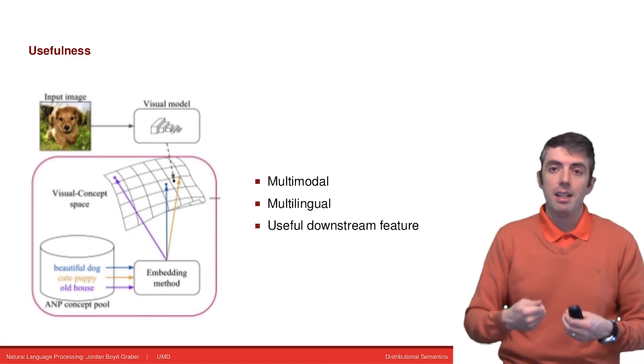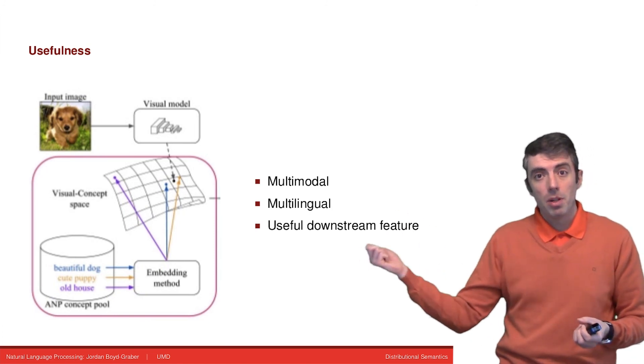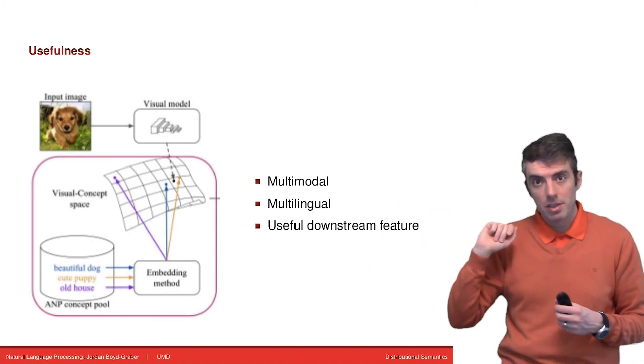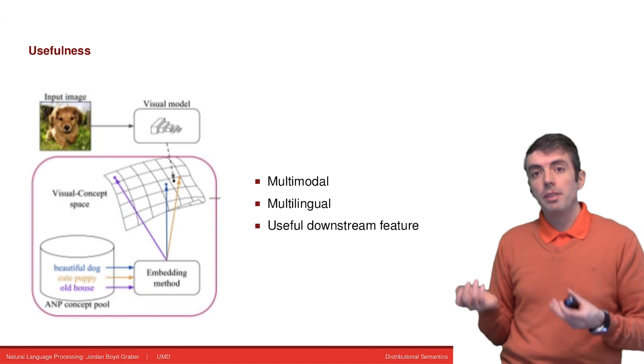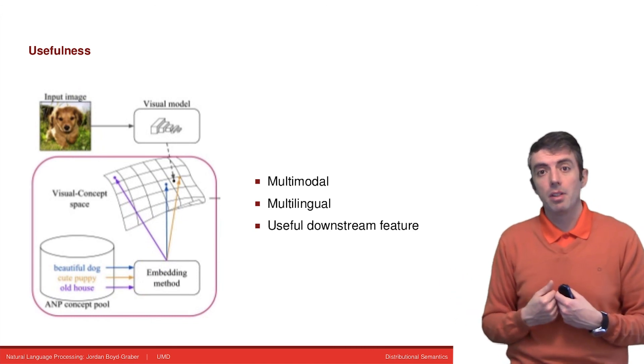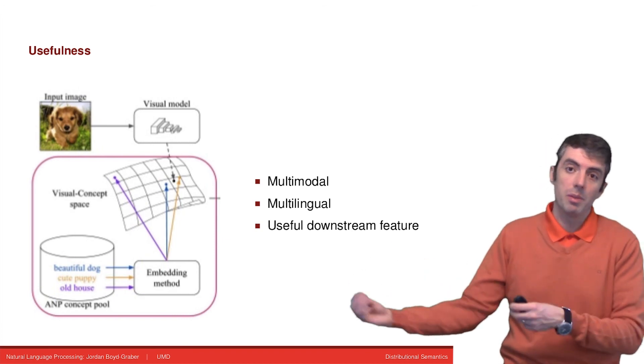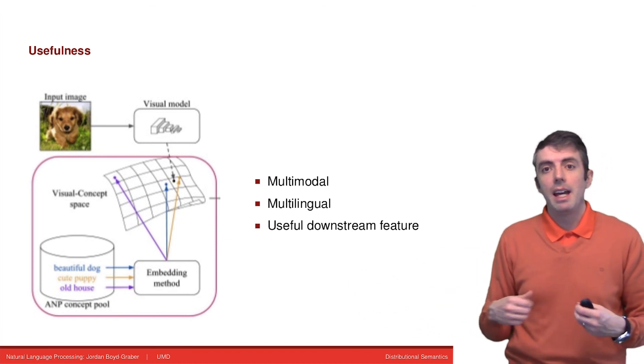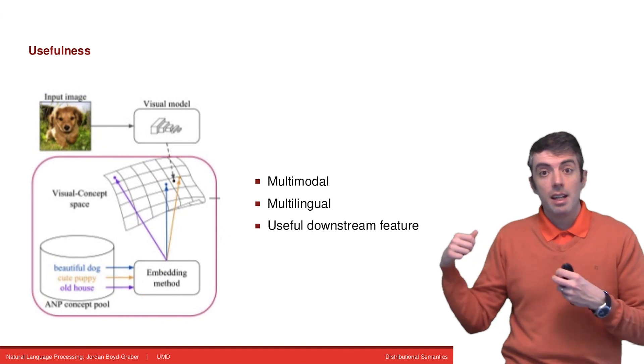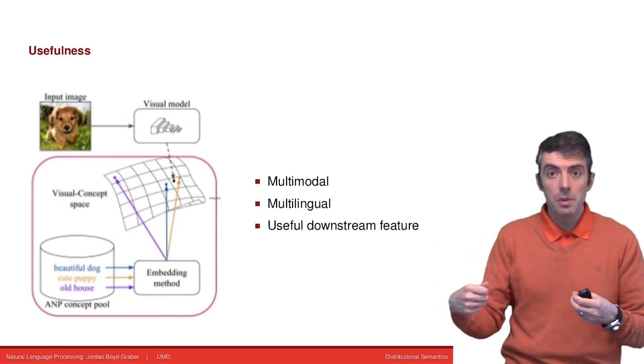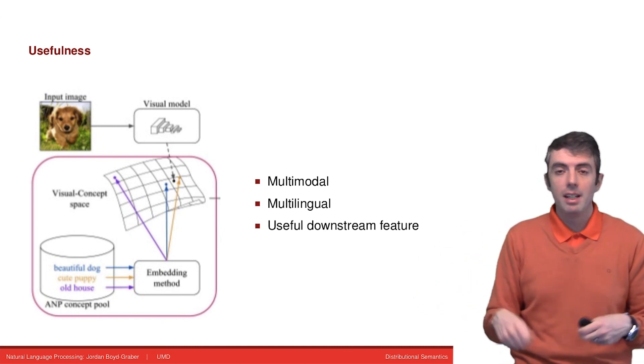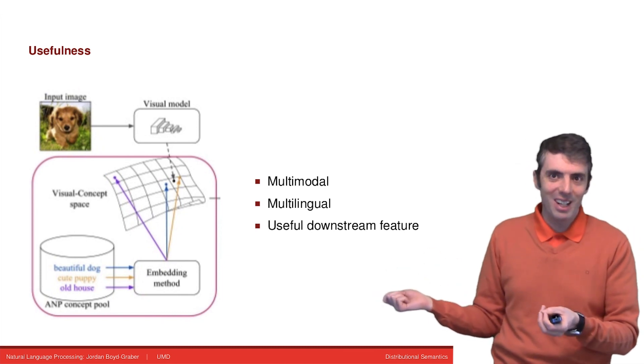One reason is that they're multimodal. You can use these same distributed representations to represent images as words and documents and objects within an image. All of these entities can live in the same space. You can ask questions like, how appropriate is this caption for this image?